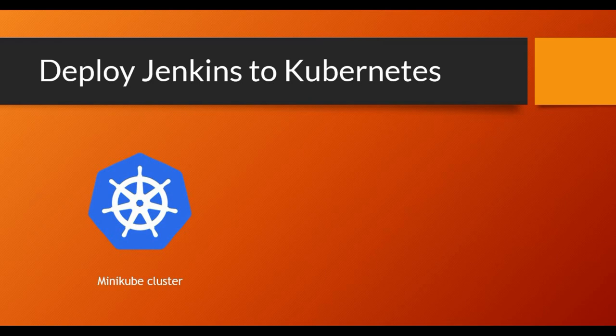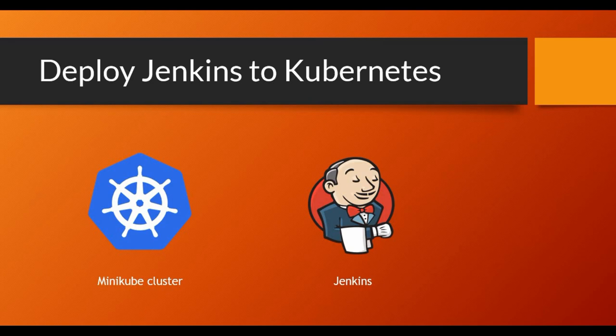We are going to use a Minikube setup, which will act as a normal cluster. Even though it's not an actual cluster with multiple nodes, the process is the same even if you have a multi-node Kubernetes cluster. So we'll see how Jenkins can be set up on the Minikube Kubernetes setup.